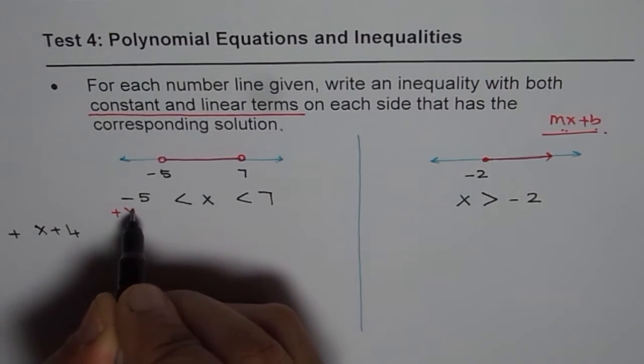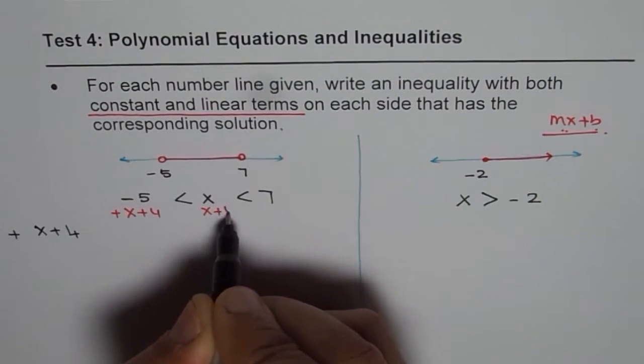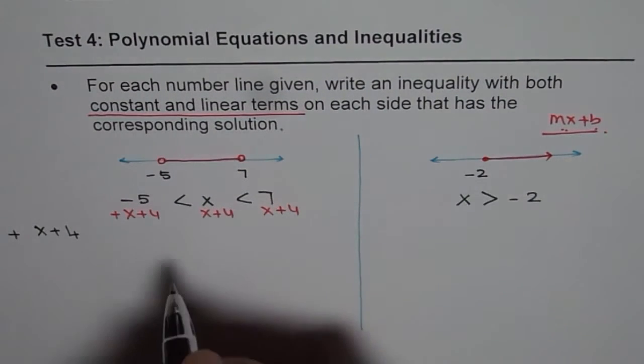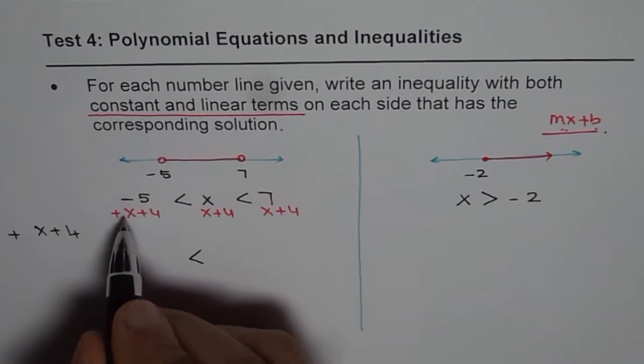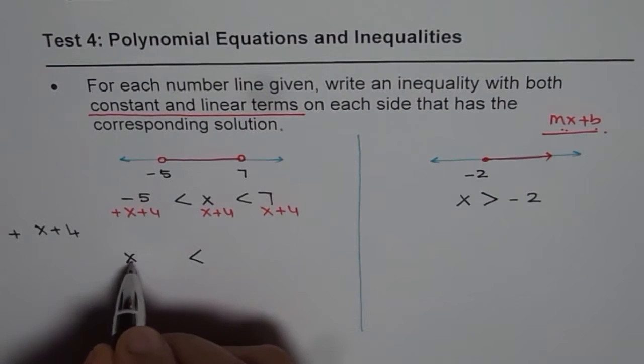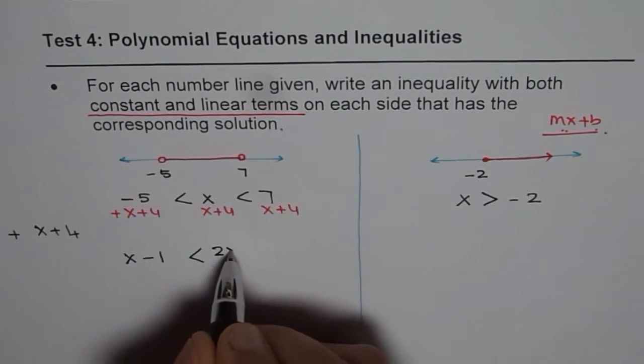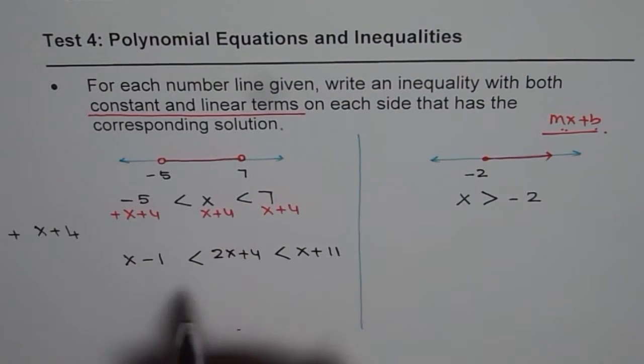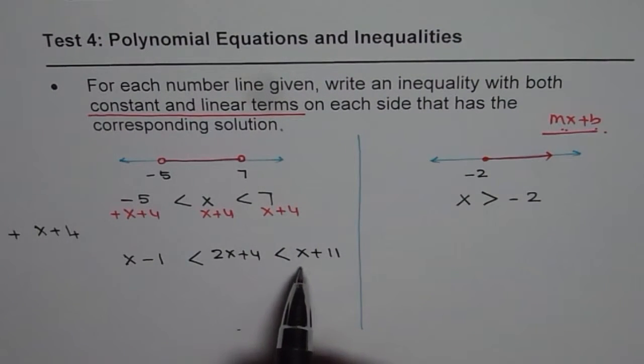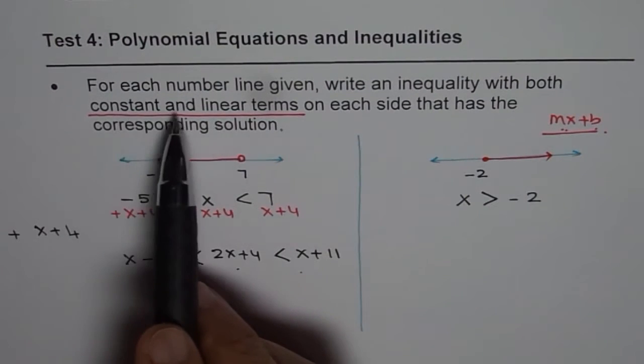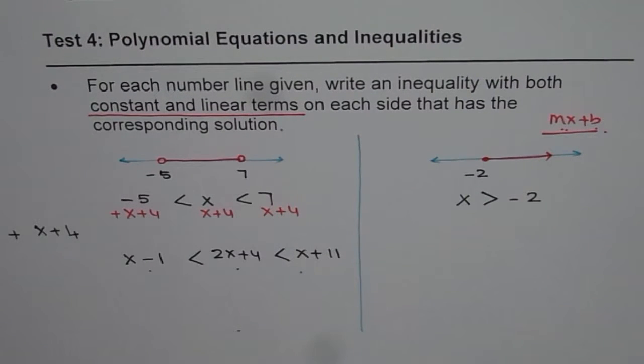I'm adding x + 4 here, I'm adding x + 4 here, and I'm adding x + 4 here. The result of this is, we get here, x and 4 - 5 is -1. So, we get x - 1. On this side, we get 2x + 4, which should be less than x + 11. So, here we have an inequality, which is a double inequality, where each term has a constant and a linear term. So, that is the solution.